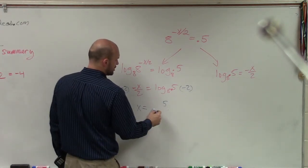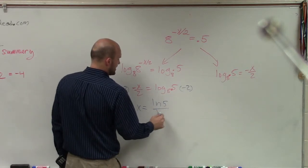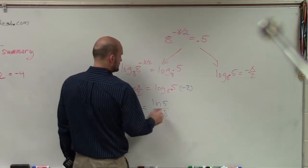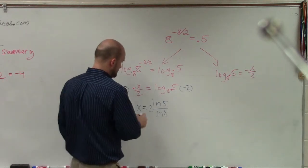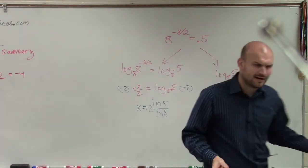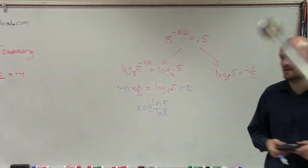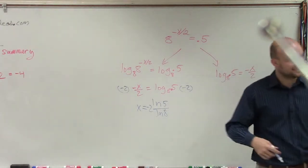Actually, let's do ln. Doesn't matter what logarithm you use. ln of 5 over ln of 8 times negative 2. Now you might say, well, why did you change that to ln? Because with the change of base formula, guys, it doesn't matter what the base is.